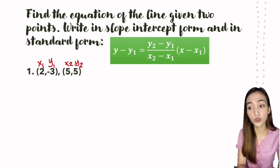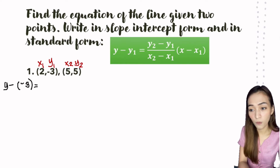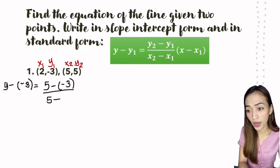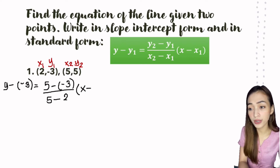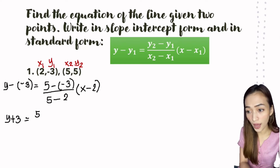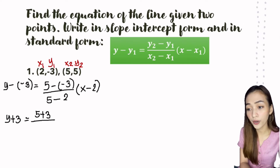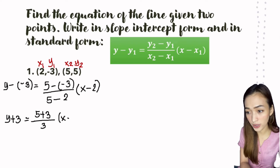Now we will substitute those given values into the formula. So we have y minus (-3) equals (5 minus (-3)) over (5 minus 2), times (x minus 2). Since both are negative, negative times negative is positive, so we get y plus 3 equals (5 plus 3) over (5 minus 2), times (x minus 2).